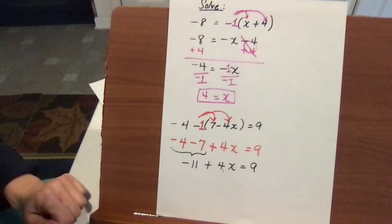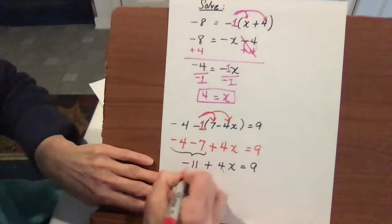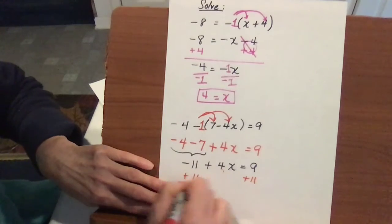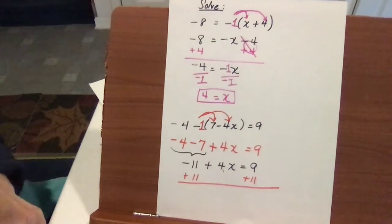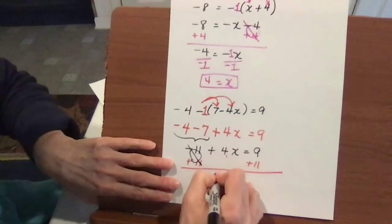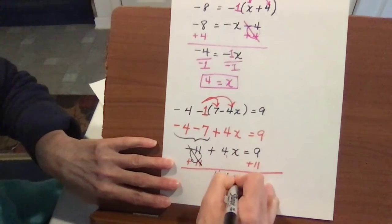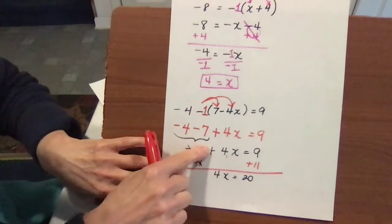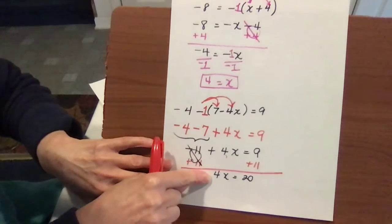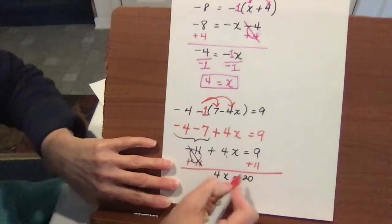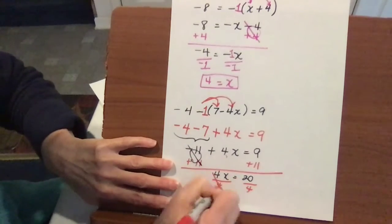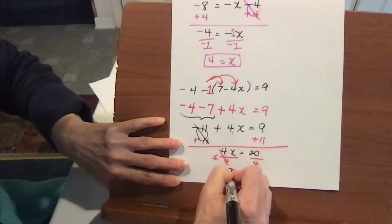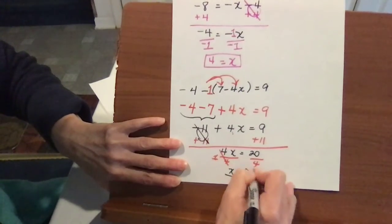Always keep your equation intact. Now add 11 to both sides to move it to the right, giving 4x equals 20. Remember, if that were a negative or minus sign you'd need to bring it down, but here it's positive. Divide by 4, and x equals 5. That is your answer.